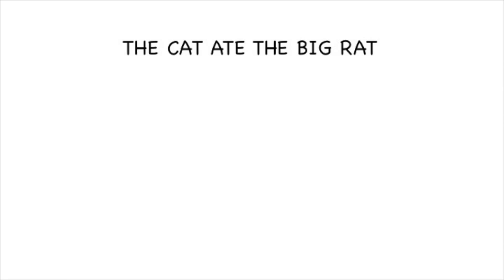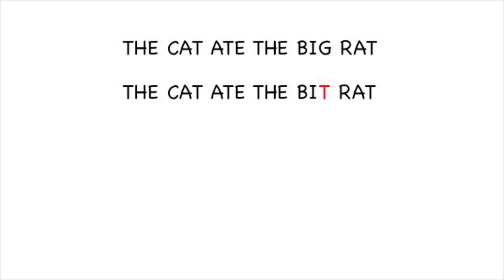Let's look at a simple example of sequence evolution using an English phrase to see how these mutations can build up over time within a lineage. We'll start with the phrase: 'the cat ate the big rat.' Let's say that one day, several thousand years later, a mutation occurs that changes 'big' to 'bit.' This organism survives and passes on this mutation to all of its offspring, and so on.